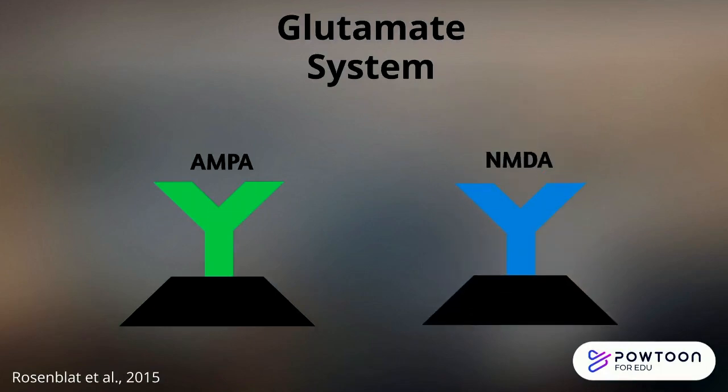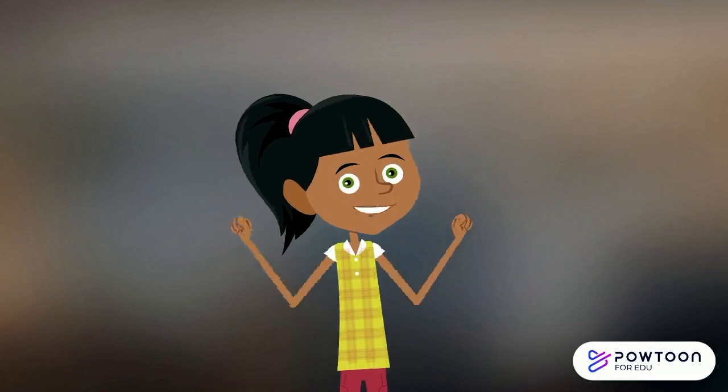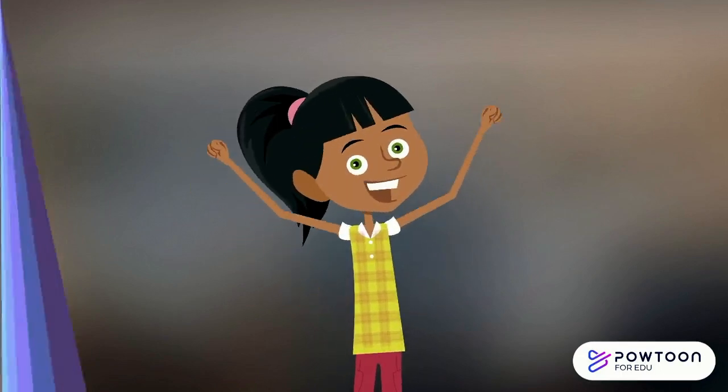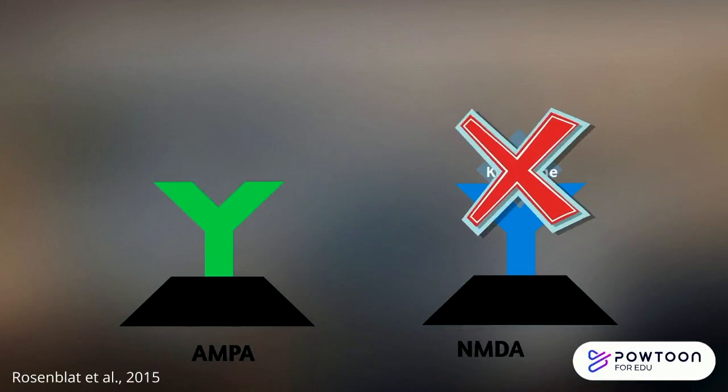To solve this, researchers have been looking beyond the monoamine pathway to find treatment targets. One such pathway is the glutamate system and in particular the AMPA and NMDA receptors. Clinical trials suggest that decreased activation of NMDA and increased activation of AMPA receptors leads to improvements in mood. Ketamine is an NMDA antagonist, meaning that it reduces activity of the NMDA receptors.